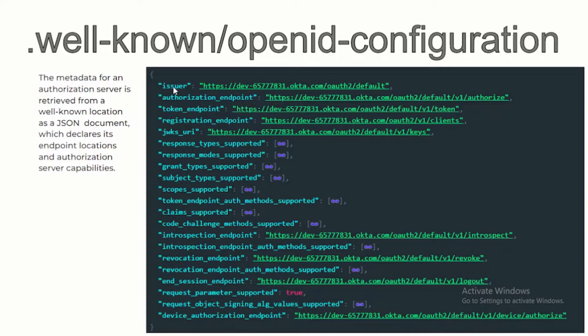On the screen you can see: number one is the issuer — with this we get to know who is the issuer of this authorization server. Then there is the authorization endpoint, used for authorization code flow. The token endpoint is from where you retrieve the tokens. The registration endpoint is used for dynamic client registration, and the JWKS URI is used to get the public JWKS. Capabilities include response types supported, response modes supported, grant types, subject types, and scopes supported.